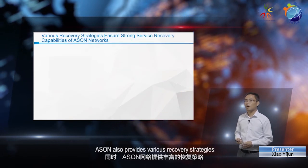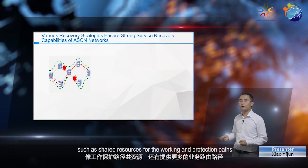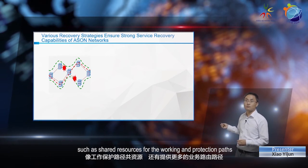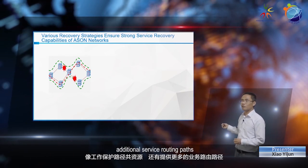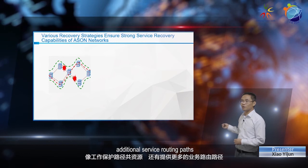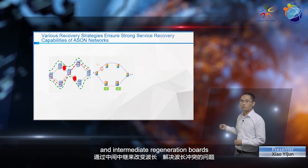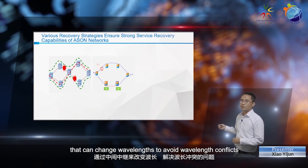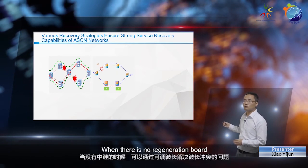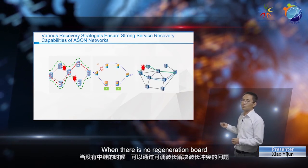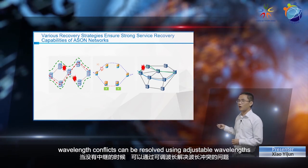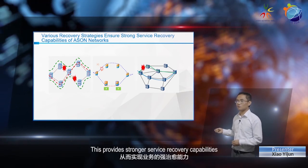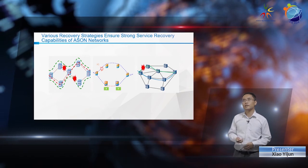ASAN also provides various recovery strategies such as shared resources for the working and protection paths, additional service routing paths, and intermediate regeneration boards that can change wavelengths to avoid wavelength conflicts. When there is no regeneration board, wavelength conflicts can be resolved using adjustable wavelengths. This provides stronger service recovery capabilities.